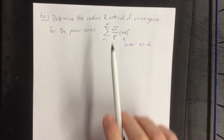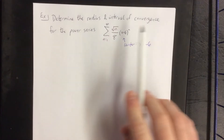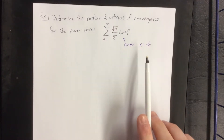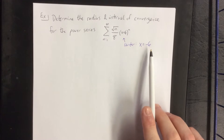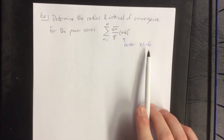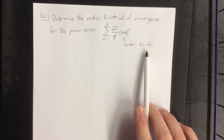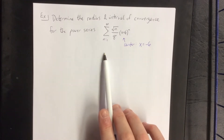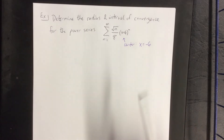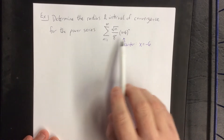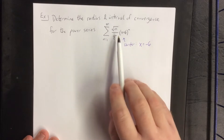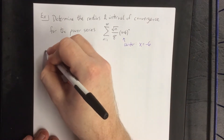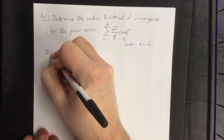When constructing the interval of convergence, negative 6 is going to be the middle number in that interval, extending a certain way to the left and to the right of negative 6 on the real number line. Not everything here is a power of n, which is why we're going to apply the ratio test.